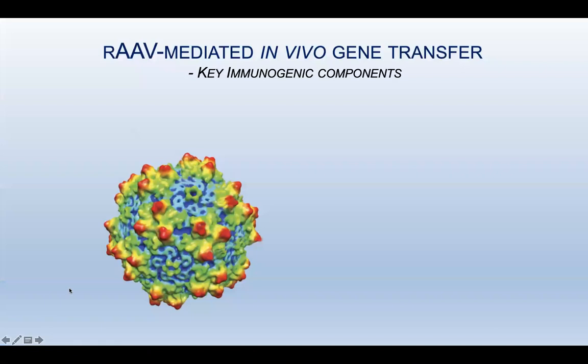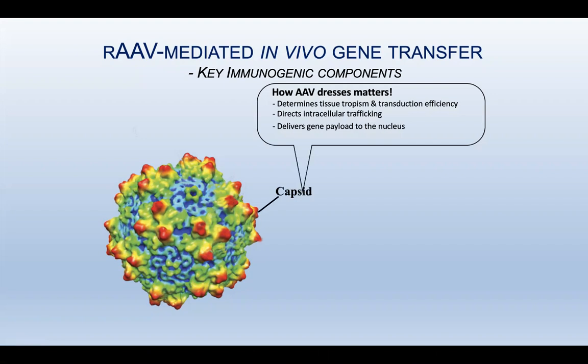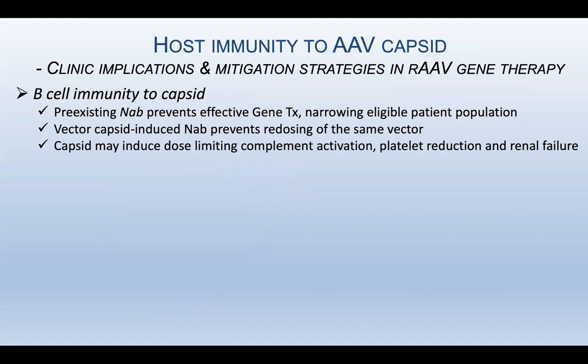In AAV-mediated in vivo gene transfer, there are two key immunological components. First is the capsid. How AAV dresses matters — it determines tissue tropism and transduction efficiency, directs intracellular trafficking, and delivers the gene payload to the nucleus. Importantly, it also dictates host immune responses. Today, I have no time to talk about host immunity to AAV capsid in detail.